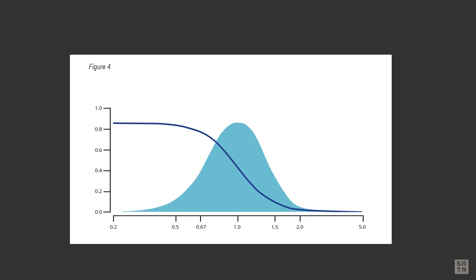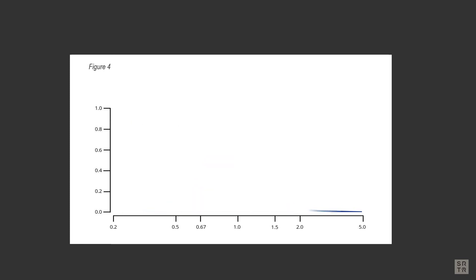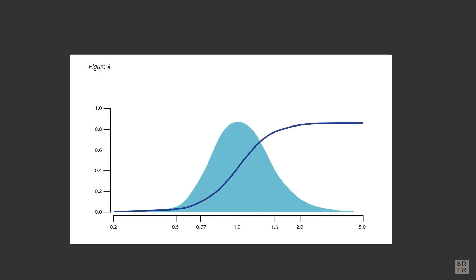Unlike the hazard ratio for first-year organ failure and the waitlist mortality rate ratio, in which lower ratios are good, higher transplant rate ratios are good. Therefore, the function used to assign a score to the estimated transplant rate ratio is reversed, such that higher transplant rate ratios yield better scores.